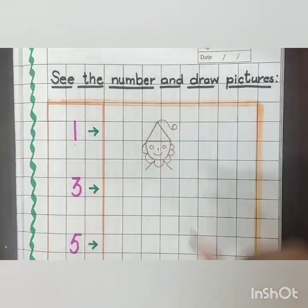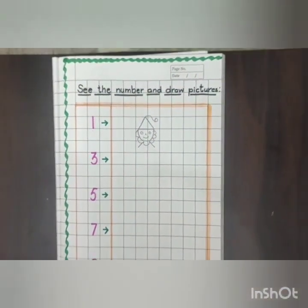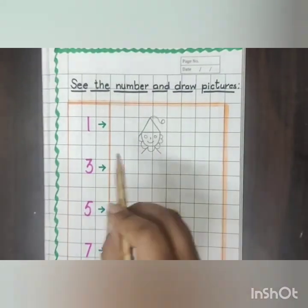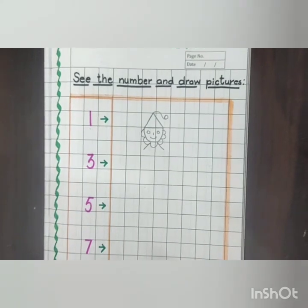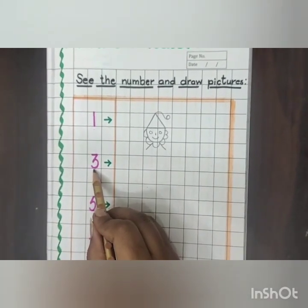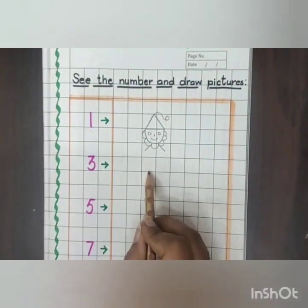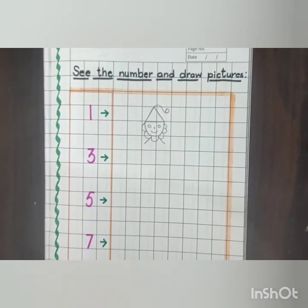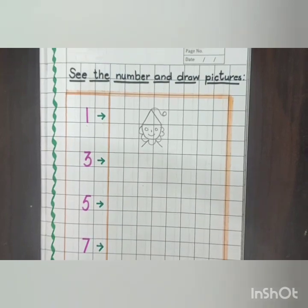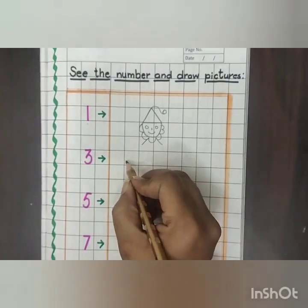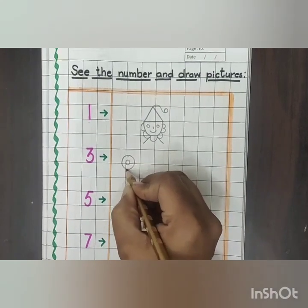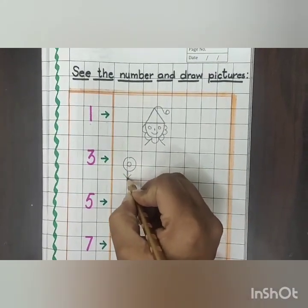So here I have drawn one picture. Next number is number three, so here I will draw three pictures. I will draw flowers, okay. I will draw three flowers: one, two, and three.